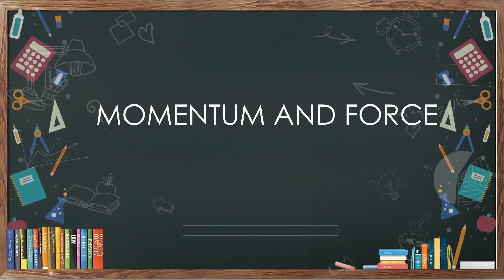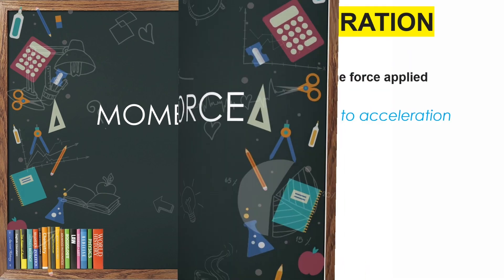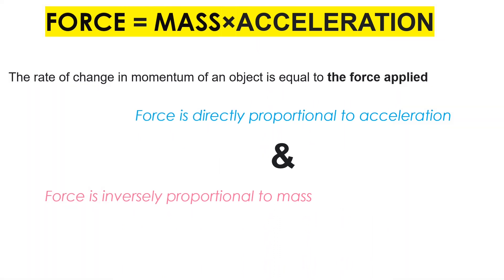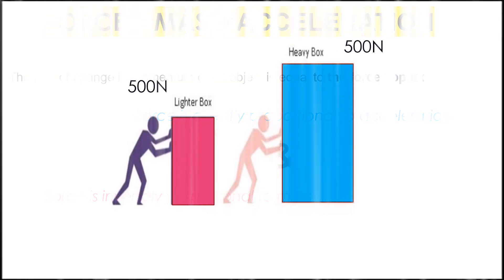Coming to Newton's Second Law, it's about momentum and force. Force is a product of mass and acceleration, and the rate of change of momentum of an object is equal to the force applied. Force is directly proportional to acceleration and inversely proportional to mass.